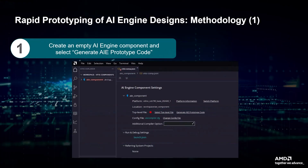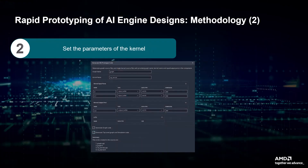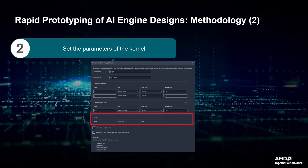To use the rapid prototyping feature in the Vitis Unified IDE, create a new empty AI-Engine component. On the AI-Engine component settings page, you'll see an option to Generate AI-Engine prototype code. Clicking on this option will open a new wizard where you can enter parameters for the kernel, such as the name of the kernel, the number of input ports and their name, type, data type and dimension, the number of output ports and their name, type, data type and dimension, and any lookup table if needed.